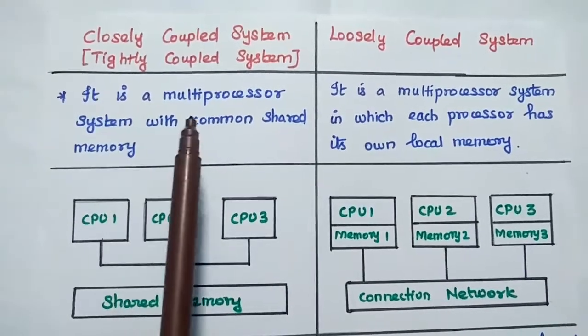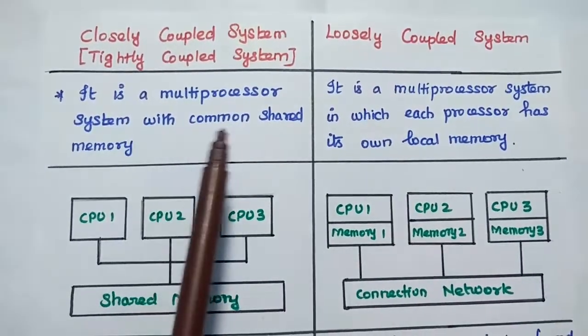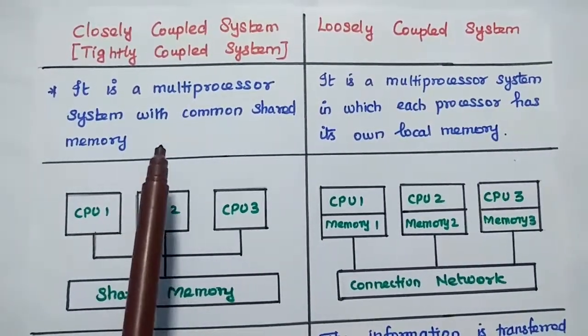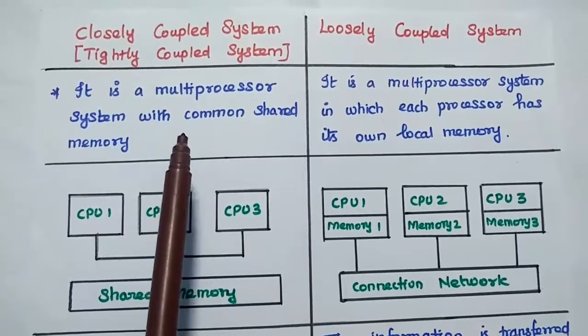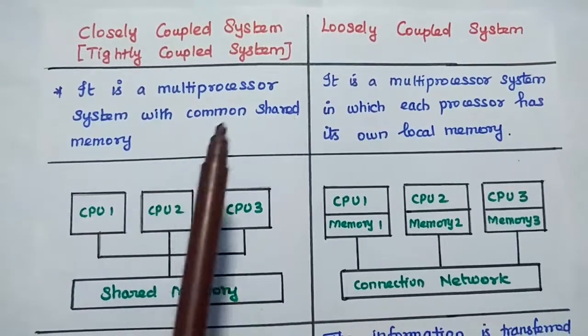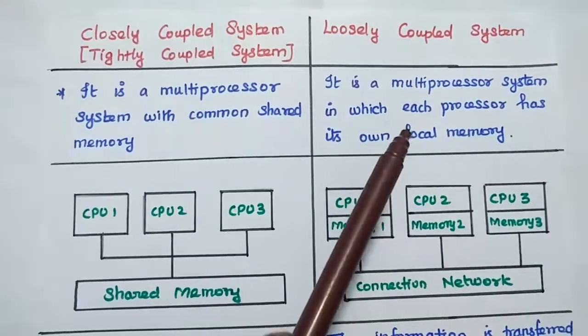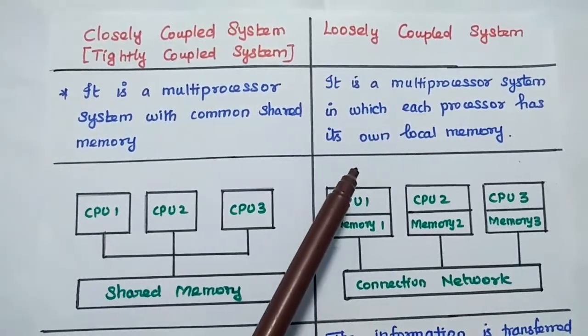It is a multiprocessor system with common shared memory. That means all CPUs present in this system can share the common memory. But in this loosely coupled system, each processor has its own local memory.